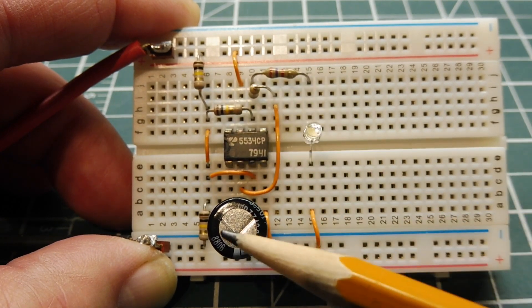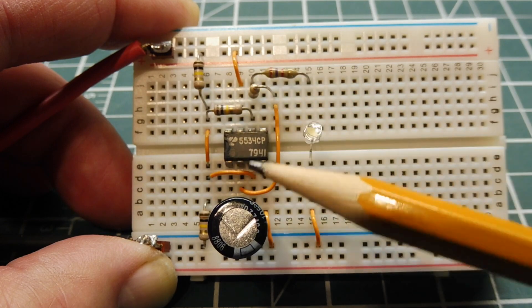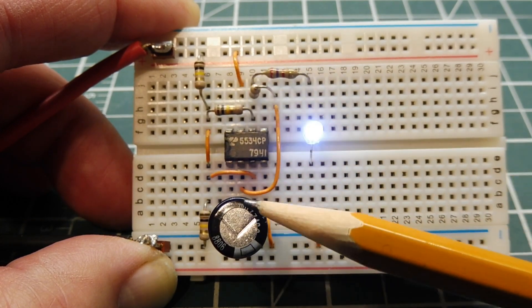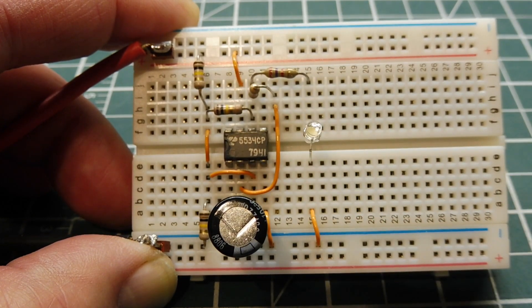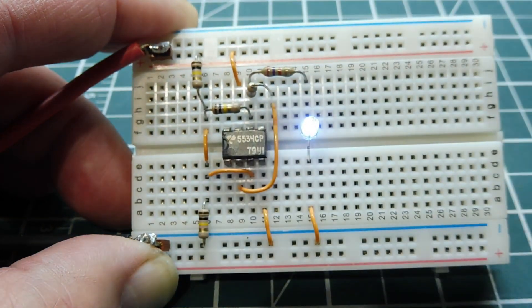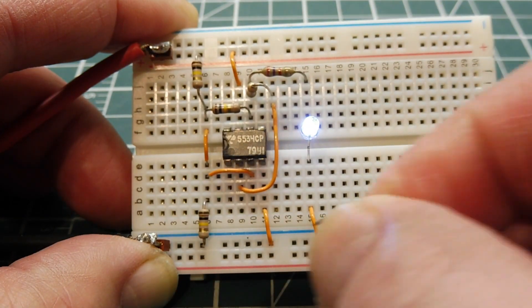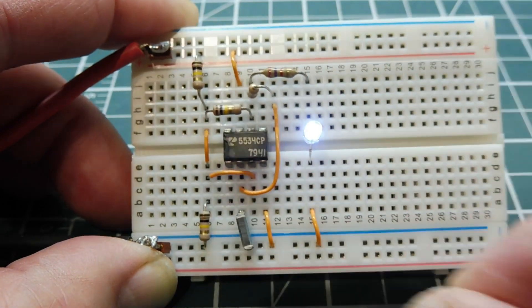Now, this capacitor here and this resistor forms the RC time constant, which determines the output frequency of our oscillator. So if I change out this capacitor to a smaller value, it'll increase the frequency, and we can actually have a look on the scope.